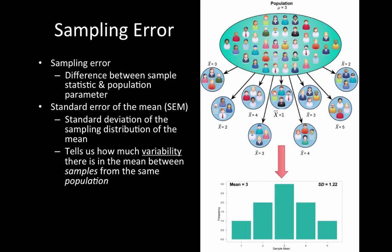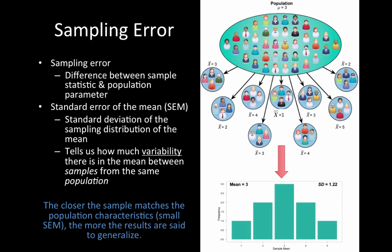One main purpose of sampling error: the closer the sample matches the population (where statistic and parameter are nearly identical), the more the results are said to generalize.